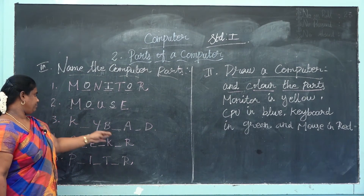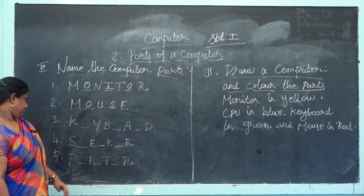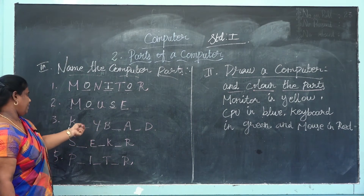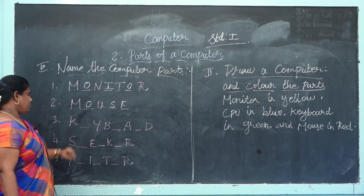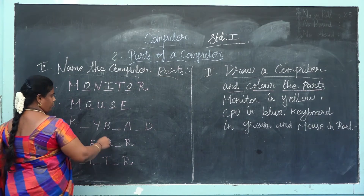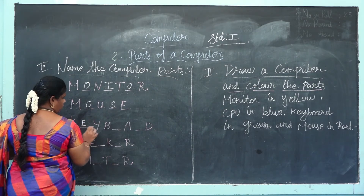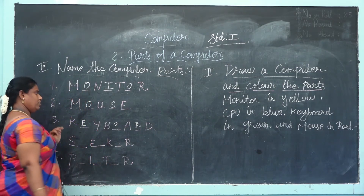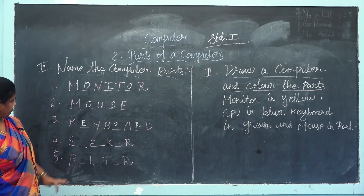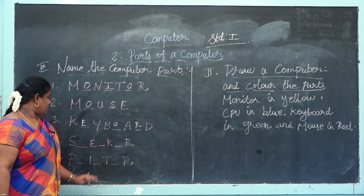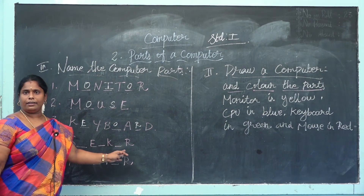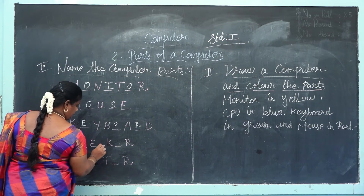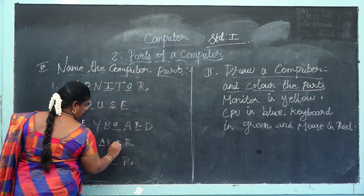What is the next one? Yes — this is keyboard. What is the spelling of keyboard? K-E-Y-B-O-A-R-D. This is keyboard. What is the next one? Speaker. What is the spelling of speaker? S-P-E-A-K-E-R.